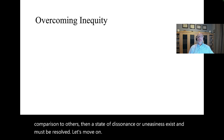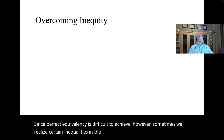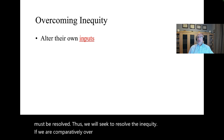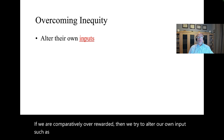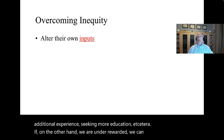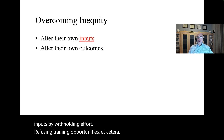Since perfect equivalency is difficult to achieve, sometimes we realize certain inequalities in the workplace that must be resolved. If we are comparatively over-rewarded, we try to alter our own inputs — such as increasing personal effort, improving our skill set, gaining additional experience, or seeking more education. If, on the other hand, we are under-rewarded, we can reduce our inputs by withholding effort, refusing training opportunities, etc. Alternatively, we can alter our own outcomes by seeking more pay or benefits, or asking for the corner office as a symbol of personal prestige.